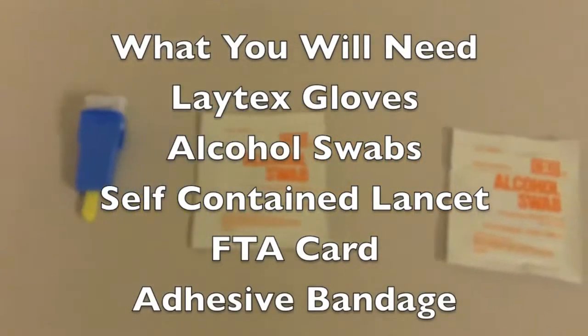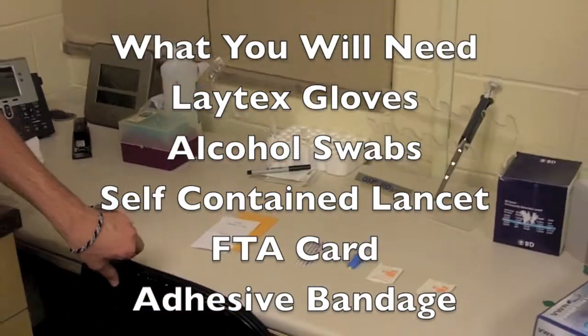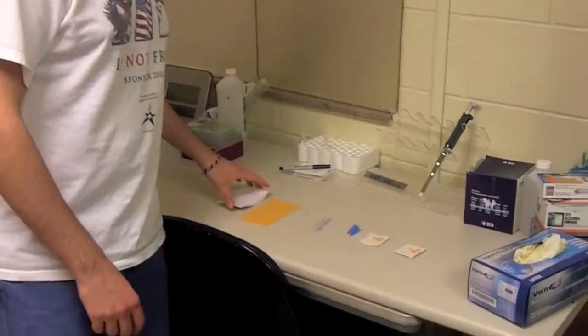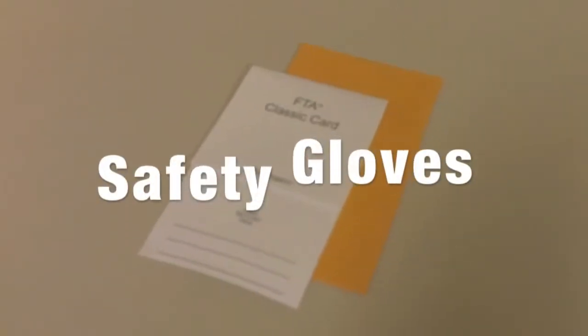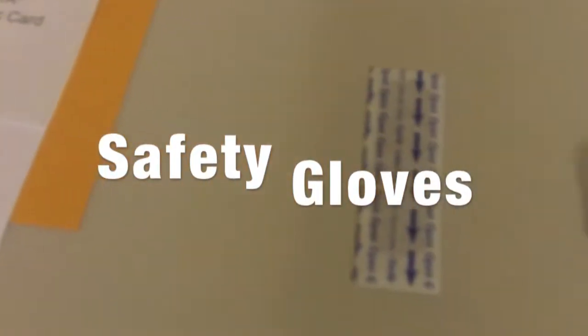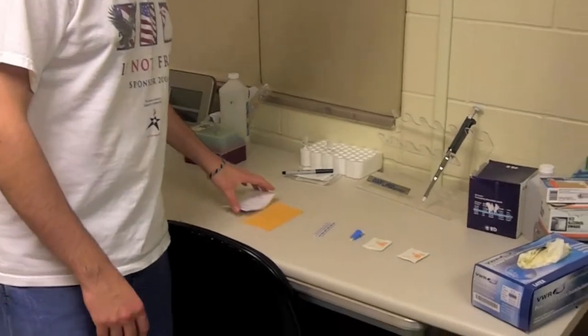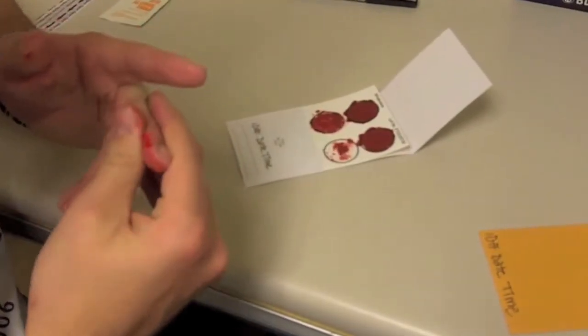What you will need: Latex gloves, alcohol swabs, self-contained lancet, four-circle Wattman FTA card with storage envelope, adhesive bandages. Before proceeding, be sure to put on latex safety gloves. These gloves should not be worn for the remainder of the session. Latex gloves should be discarded at the end of DNA sampling. Gather together the materials on a table and stand up near the table where all materials are easily at reach.